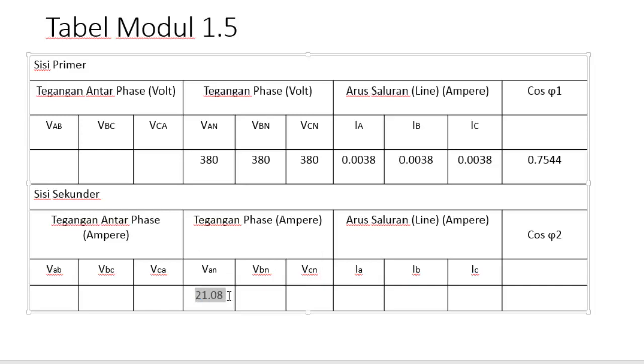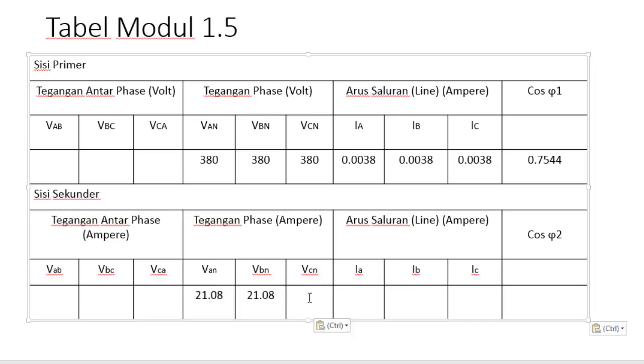Saya tulis di dalam tabel. Tegangannya tadi 21.08, saya copy paste untuk yang fase yang lain. Kemudian arusnya adalah tadi 0.021 ampere, yang lain juga sama. Selanjutnya untuk VAB tegangan antar fase nanti bisa dicari dengan menggunakan persamaan yang sebelumnya. Kemudian untuk cos φ adalah 0.8659.